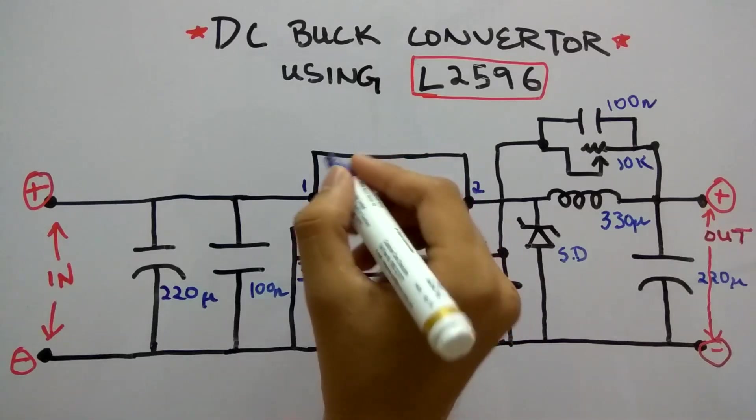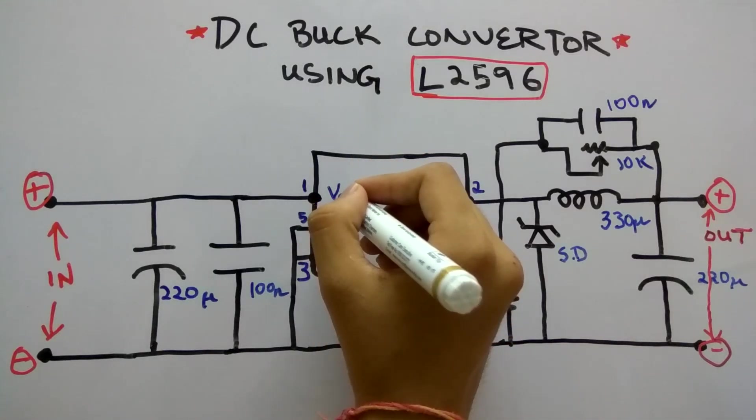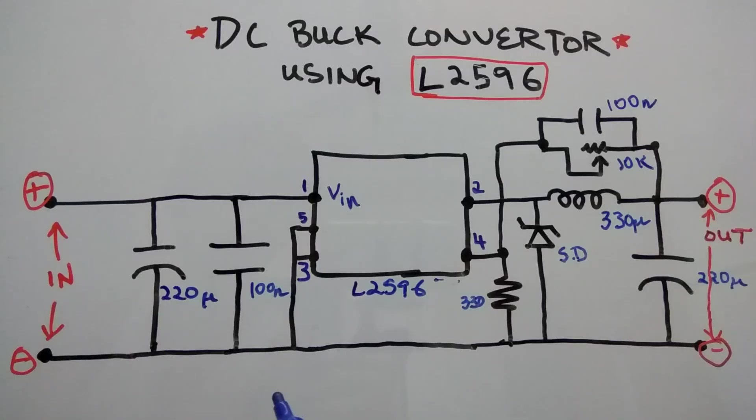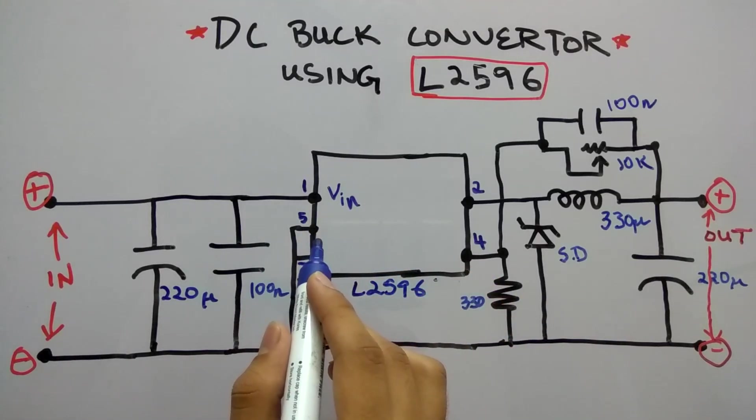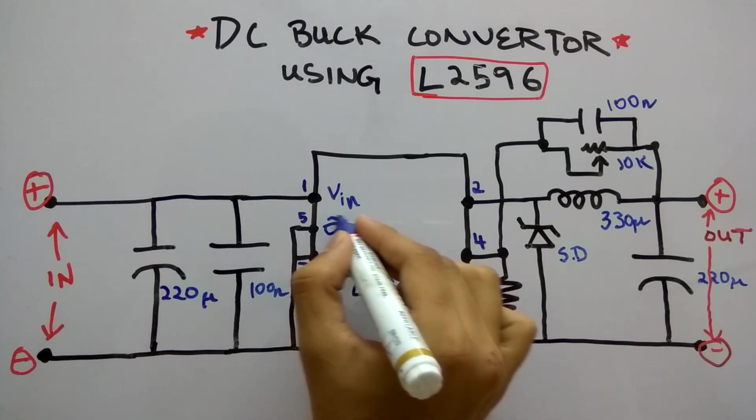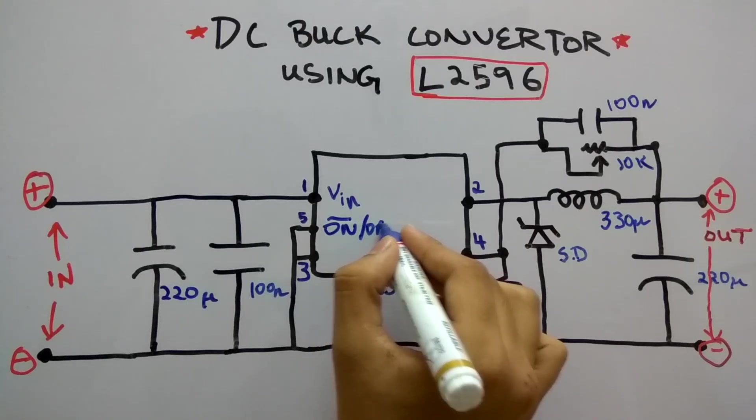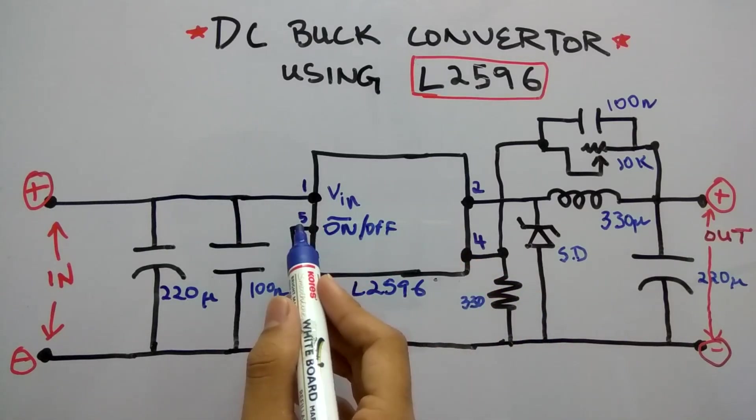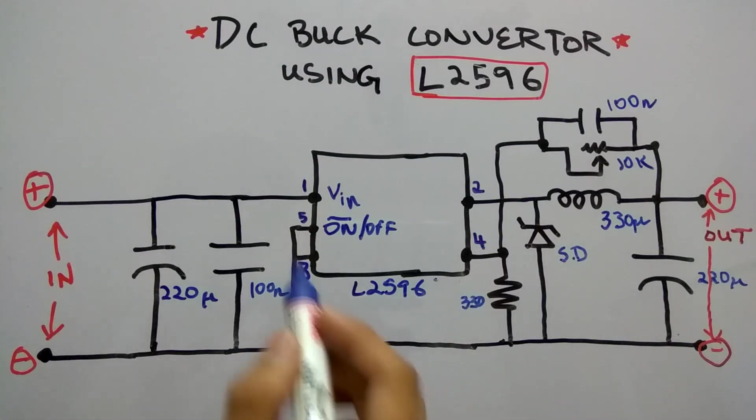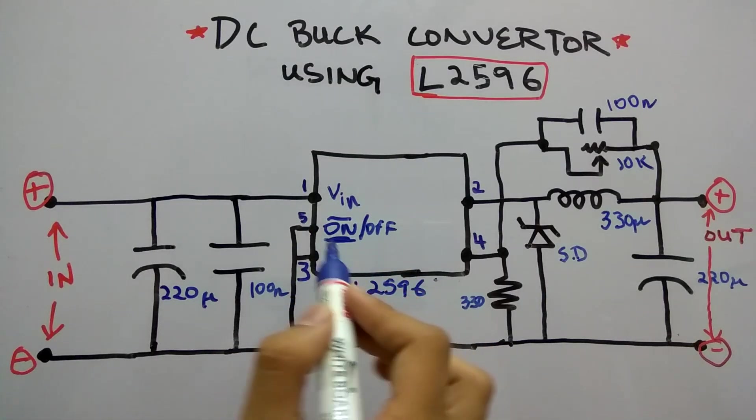This connection goes to the L2596 right over here. The first pin is the V_in as we saw, so the positive voltage directly goes to the input pin. The fifth pin we had seen was the on/off pin - that is the on bar off pin - and here we see it's connected to the ground, so it is in the on state.